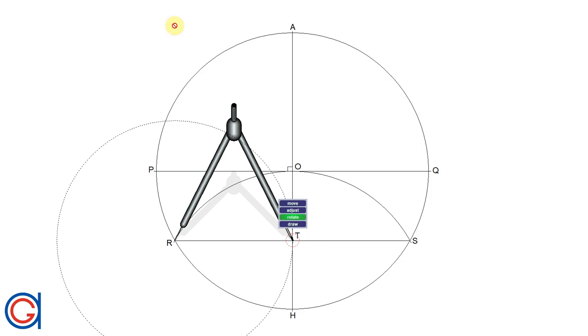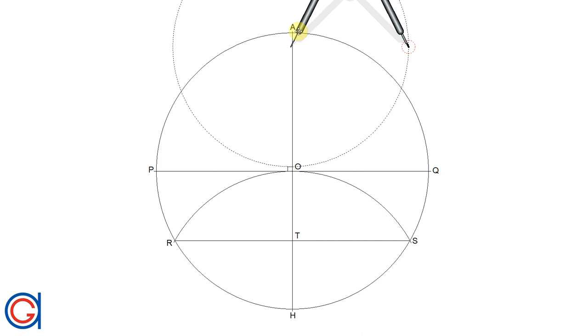First we set our compass to the length RH as can be seen here and we set our compass on point A and we are going to scribe seven arcs. There is our first one.